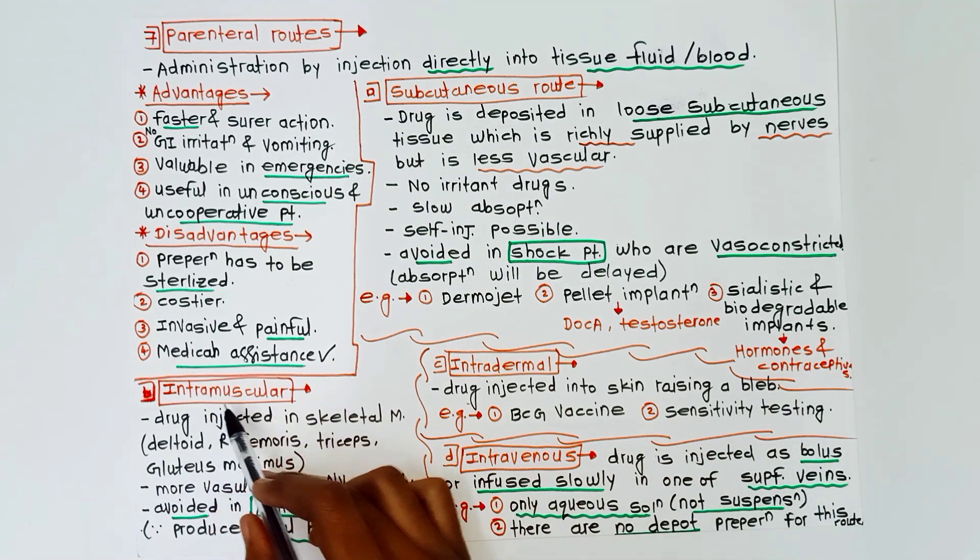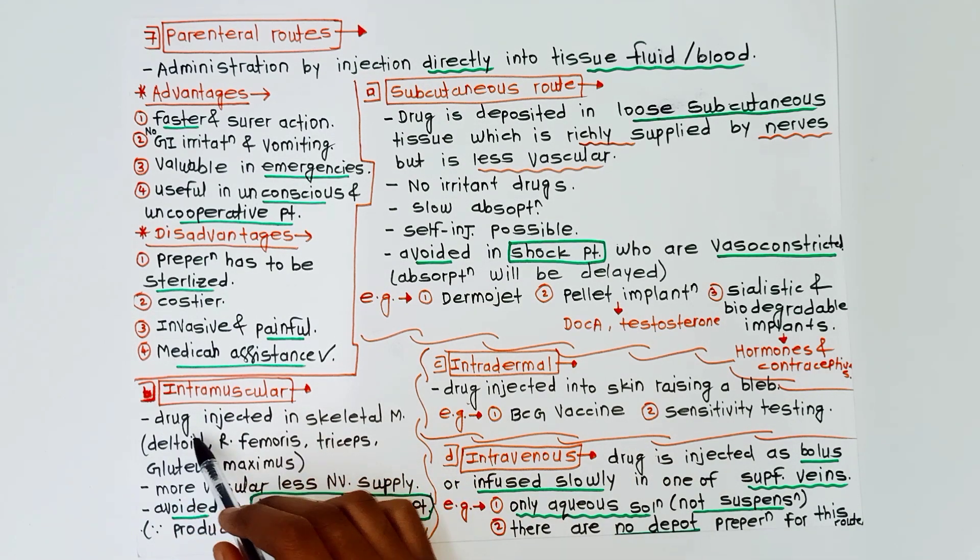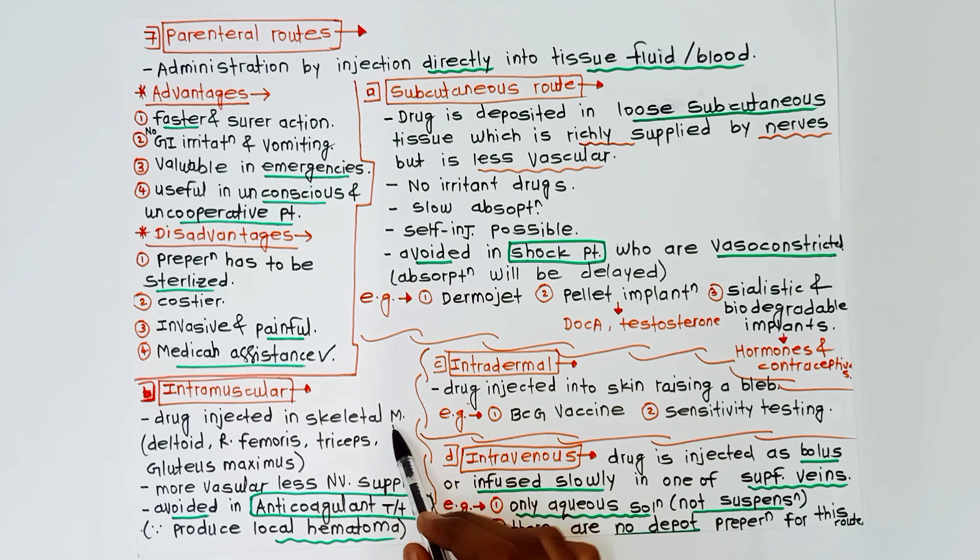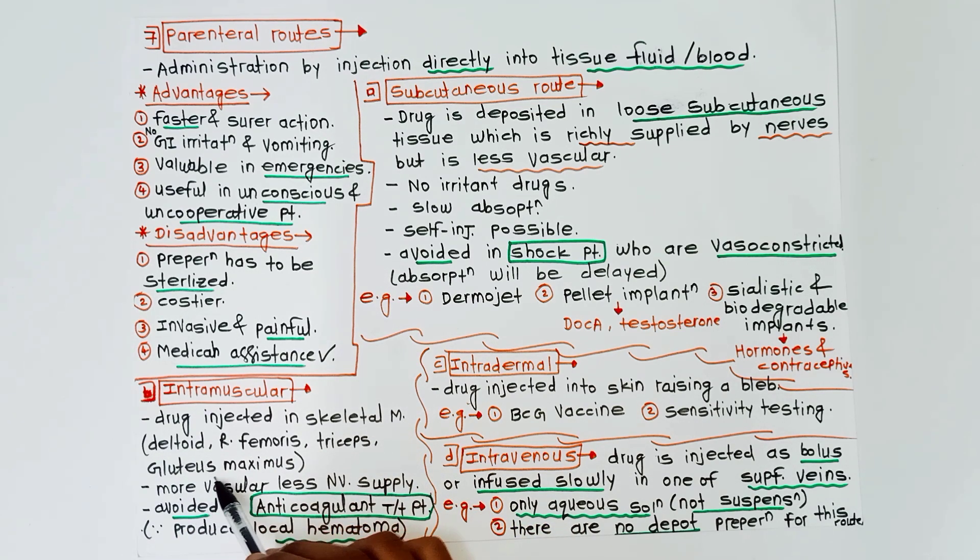Next route is intramuscular. In this case, drug is injected in skeletal muscles like deltoid, rectus femoris, triceps, gluteus maximus. It is more vascular and has less nerve supply. It is avoided in anticoagulant-treated patients because it can produce local hematoma in these patients.